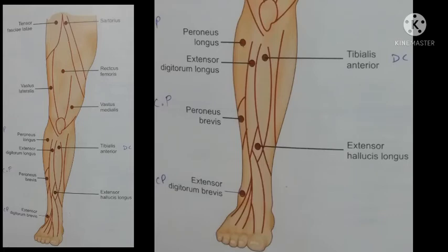To stimulate tibialis anterior, the pan electrode should be on the tibial tuberosity. The action of tibialis anterior is dorsiflexion and inversion of foot. To stimulate extensor digitorum longus, the pan electrode should be lateral to the tibial tuberosity and medial to the peroneus longus muscle.